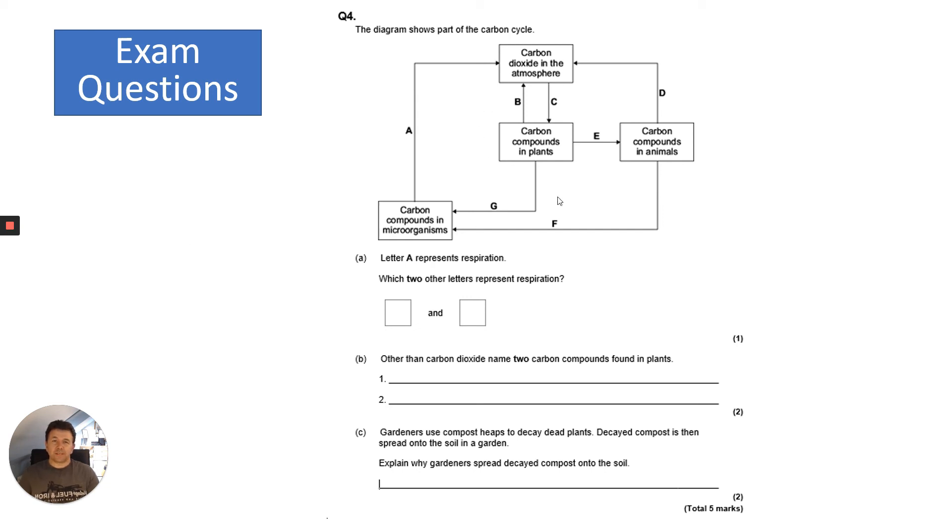They give you lots of letters. It says letter A represents respiration, so which two other letters represent respiration? We know respiration occurs in plants and also in animals, so it can only be B and D.